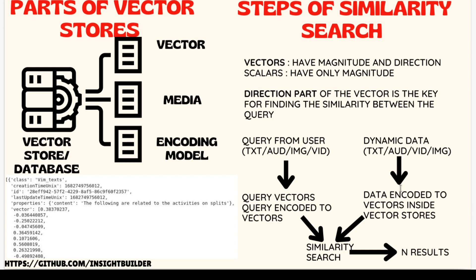The other leg is that the dynamic data you want to query is already fed into the vector store and converted to vectors. Both legs — the query vector and the stored data vectors — combine together in the similarity search, and the output result comes out. This is where the actual magic happens.